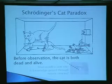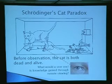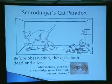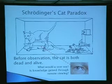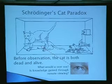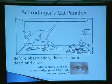What we're interested in is when a seer sees, and somebody is gazing at this with remote viewing — if knowledge is gained through remote viewing, does that cause the cat to be dead or alive? Does it collapse that superposition?